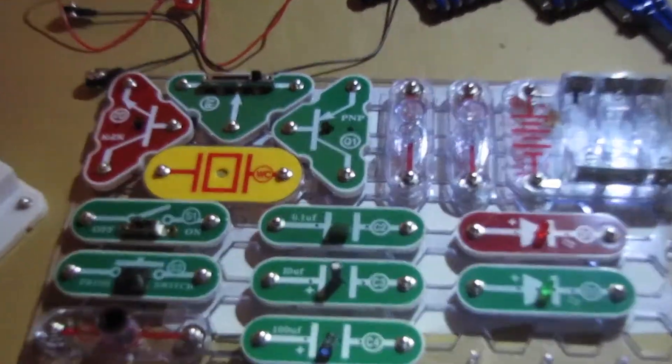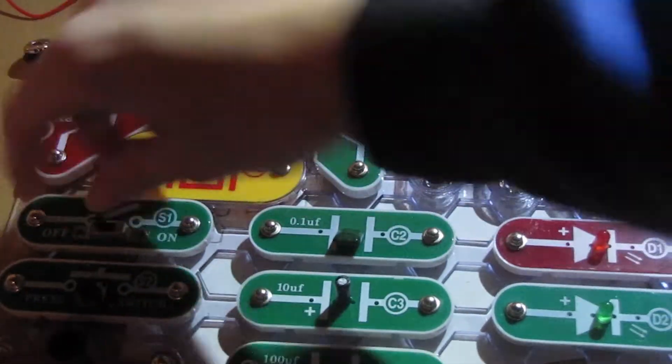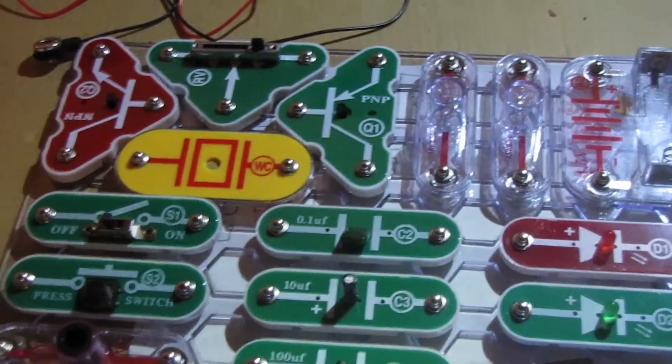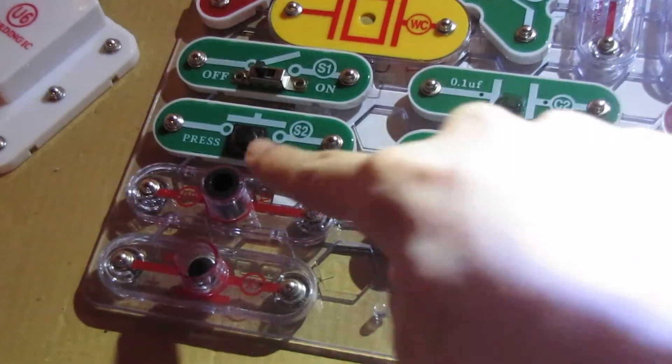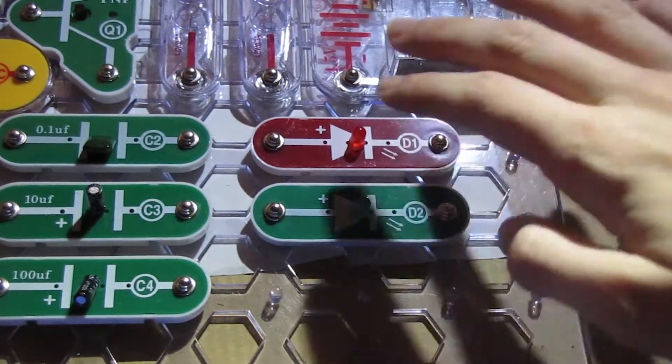Let me zoom in. We got two switches. This is a slide switch and a press switch, a photo resistor, a microphone, three capacitors, and two LEDs, one red and one green.